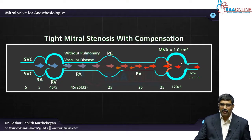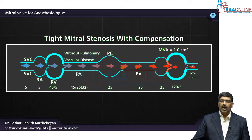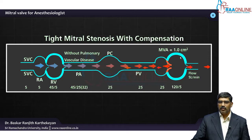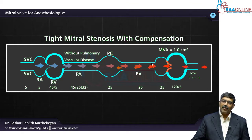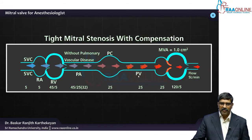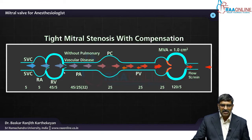In severe mitral stenosis which is well compensated, the left ventricular filling is altered. The cardiac output which was around 6 liters has come down to 5 liters. The LA pressure, which was around 6 to 10, has now increased to 25, and this 25 is reflected back on the pulmonary venous system. This pulmonary venous pressure is then reflected back on the pulmonary artery, which is now around 45 by 25. The pulmonary vascular resistance has not yet fully developed.